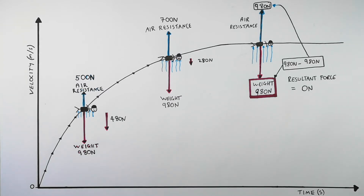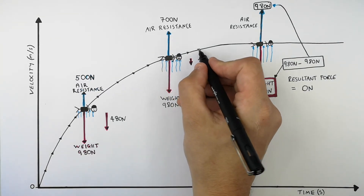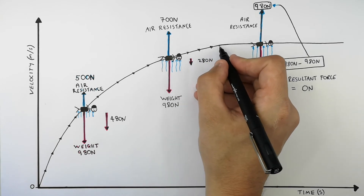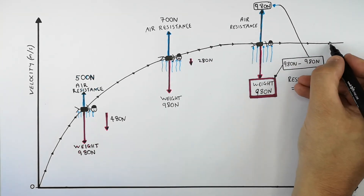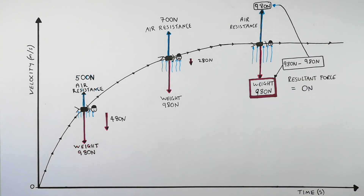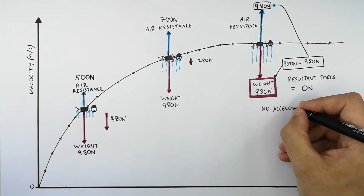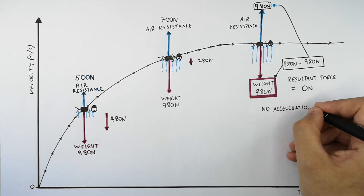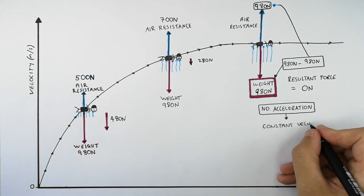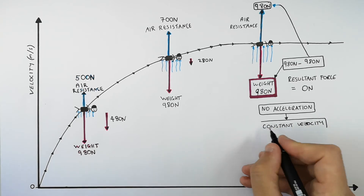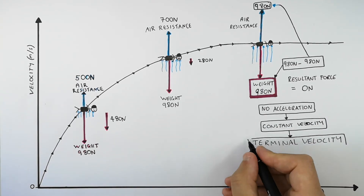That means the skydiver is no longer accelerating. The skydiver's velocity increased to the terminal velocity and is no longer increasing. At this point of the skydive, where the resultant force equals 0, there is no acceleration — the skydiver is moving with a constant velocity. This constant velocity is known as the terminal velocity.